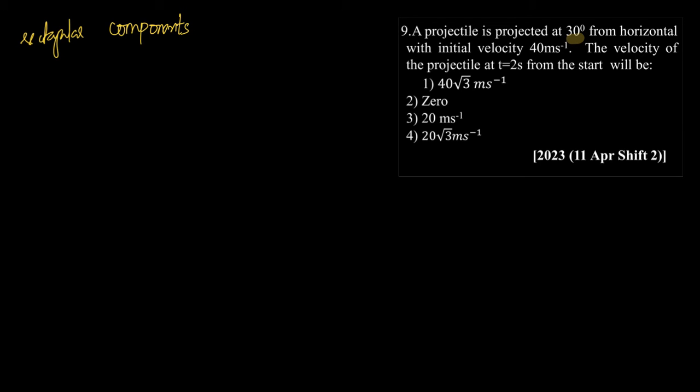We know that when an object is projected with velocity u at an angle theta, it will undergo projectile motion, follow a parabolic trajectory, right? And here we have been asked to find out the velocity at t equals 2 seconds, maybe at this position, okay?